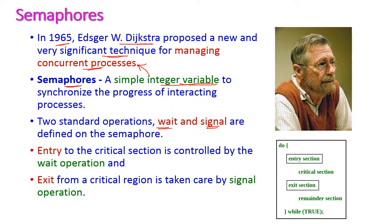Let us see what is the purpose of the wait operation. The wait operation is used at the entry point to the critical section — this is the entry section, where the wait operation is used. And the signal is used in the exit section — here, the signal operation is used.